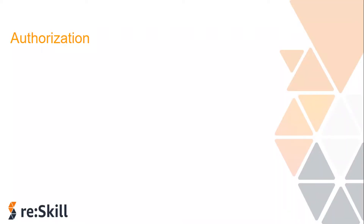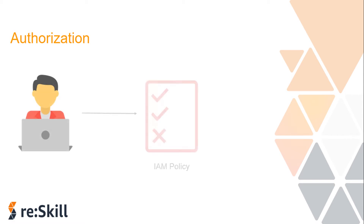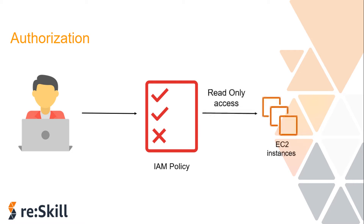Authorization is the process of determining what permissions a user, service, or application should be granted. By default, IAM users do not have any permissions to access resources or data in an AWS account. You must explicitly grant permissions to a user, group, or role by creating a policy. For example, a user may be authorized via an IAM policy for EC2 instances but only for read access. The IAM policy includes permissions to allow or deny access to any resource on AWS.